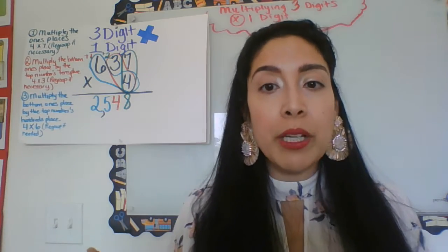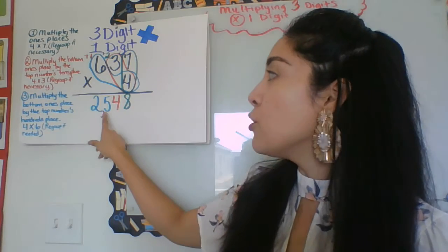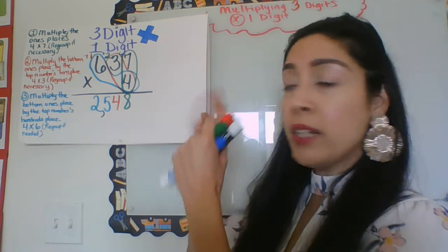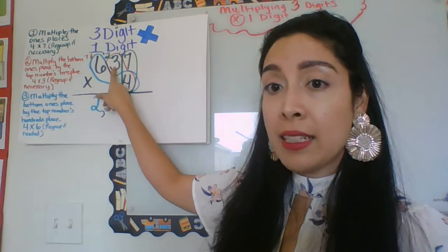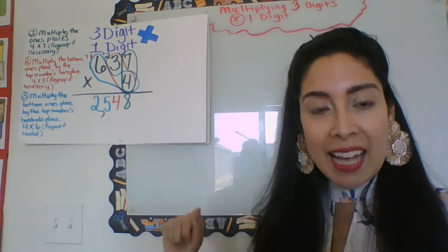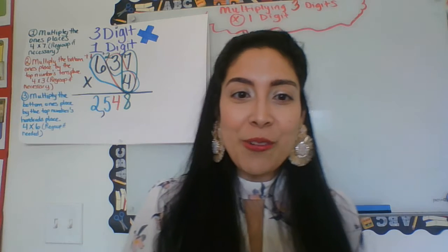There's no more values. My answer is 25. So totally, everything, the product is what we call it, or the answer, is 2548. So again, it's the ones with the ones, the ones with the tens, the ones with the hundreds, so everyone has to be multiplied.